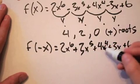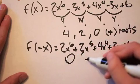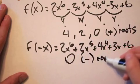Here, we have no sign changes because they are all positive. So we have zero possible negative roots.